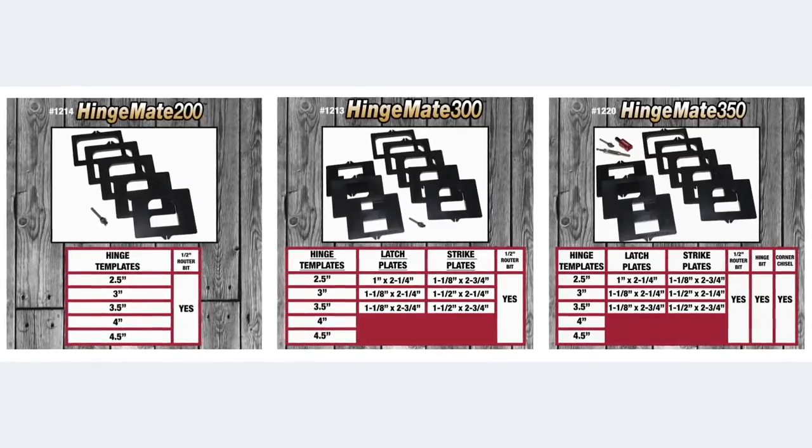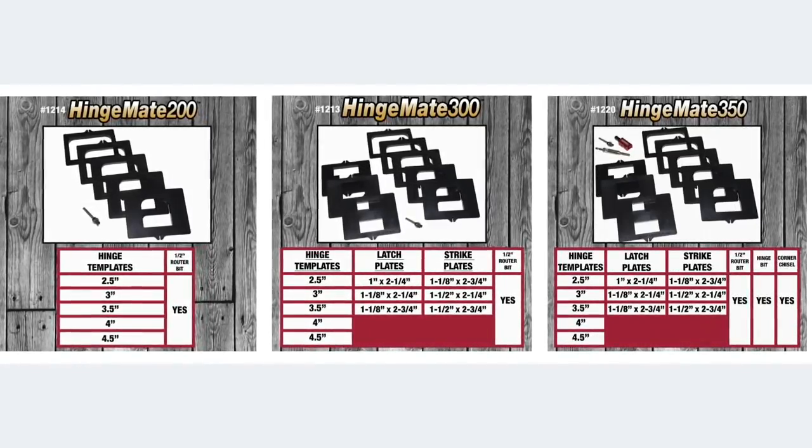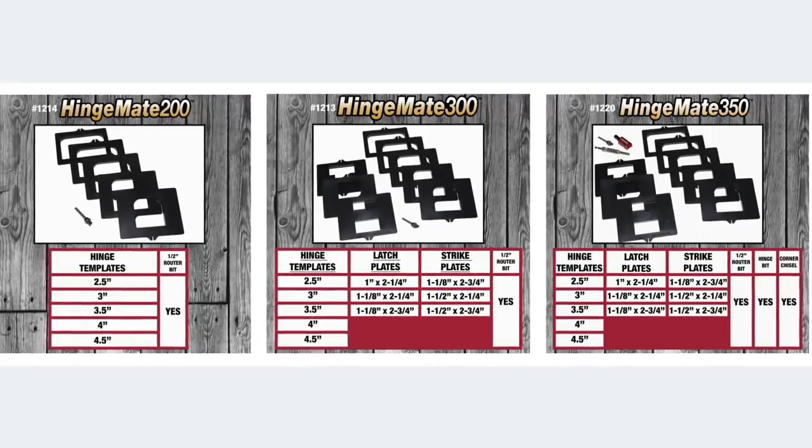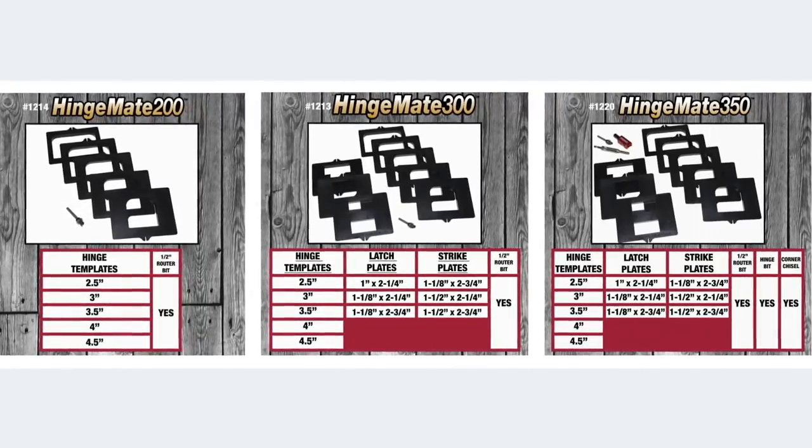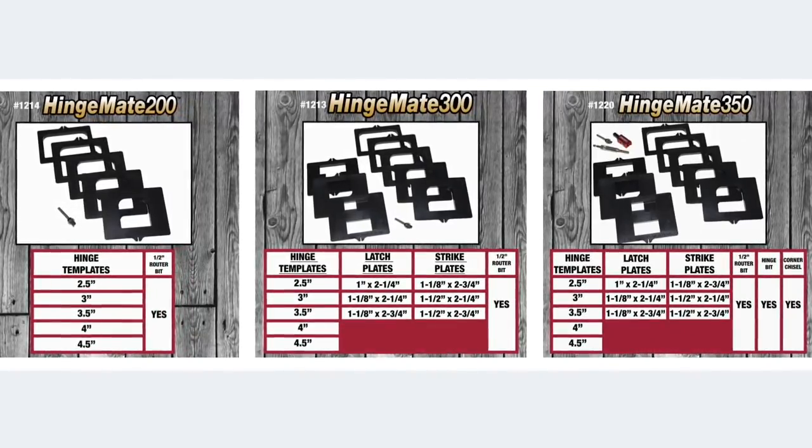MilesCraft offers three complete kits to cover your specific needs. The 1213 Hingemate 300 will complete door hinges, strike plates, and latch plates and comes with the needed router bit.